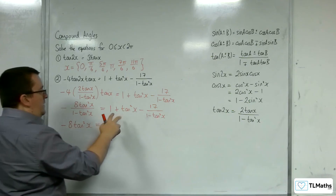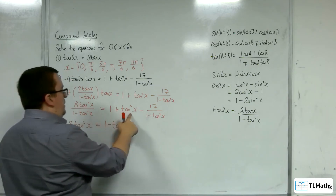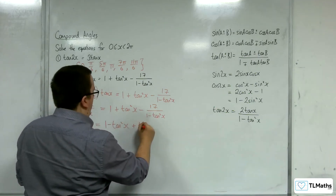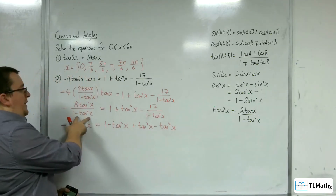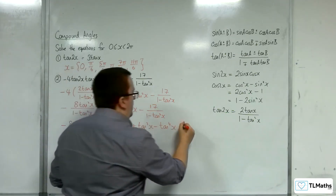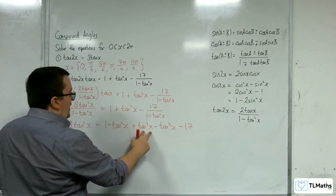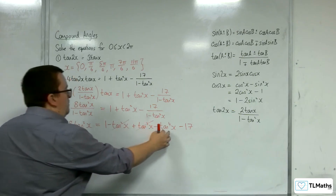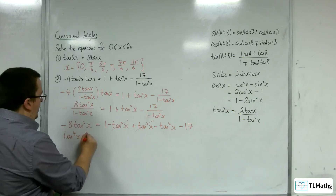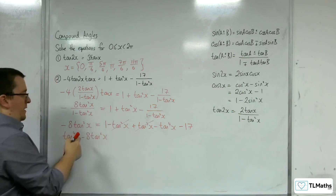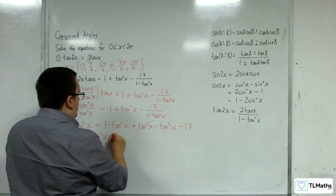1 minus tan squared times 1 is 1 minus tan squared. 1 minus tan squared times tan squared will get me tan squared minus tan to the 4. And 1 minus tan squared times the other term will leave me with minus 17. We've got minus tan squared plus tan squared, so they cancel one another out. Let's move everything on to the left-hand side. We've got tan to the 4x, take away 8 tan squared — that's staying where it is — and we've got 1 take away 17, which is minus 16. Add 16 to both sides.